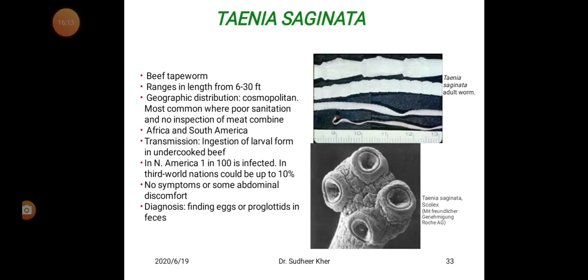Beef tapeworm ranges in length from 6 to 30 feet. Geographic distribution is cosmopolitan, most common where poor sanitation and lack of meat inspection are combined — Africa and South America. Transmission is by ingestion of the larval form in undercooked beef. In North America, 1 in 100 is infected. In third world nations it could be up to 10 percent.